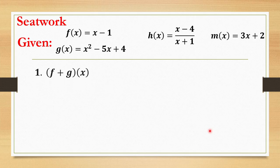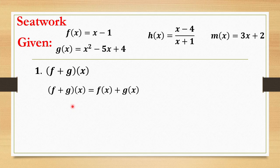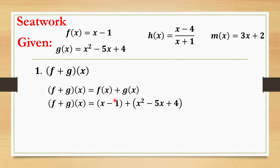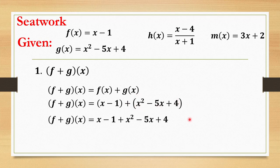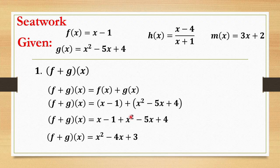For number 1, these are the values: f(x), g(x), h(x), and m(x). So f plus g of x — we're going to distribute the addition. We have the value of f(x) which is x minus 1, plus g(x) which is x squared minus 5x plus 4. I-distribute lang natin. Tanggalin na natin yung parentheses. Nakita natin dito — ito yung x at ito yung x, so they have a common literal coefficient. Pwede natin silang i-combine. This is x squared, and then negative 5 is bigger so we have negative 4x, and then negative 1 plus 4 gives us positive 3.